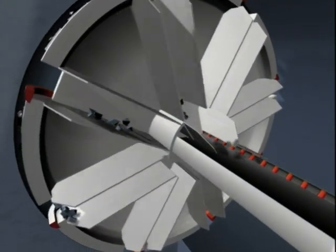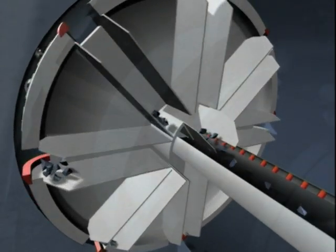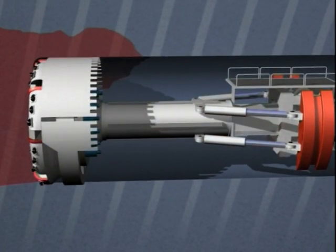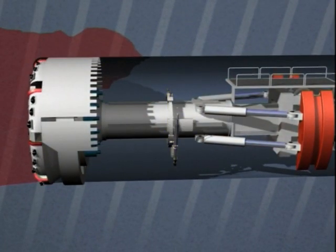The broken rock falls onto a bucket wheel and is then transferred onto a conveyor belt behind the cutting head. While boring goes on, securing work is carried out under the protective roof immediately behind the cutting head.